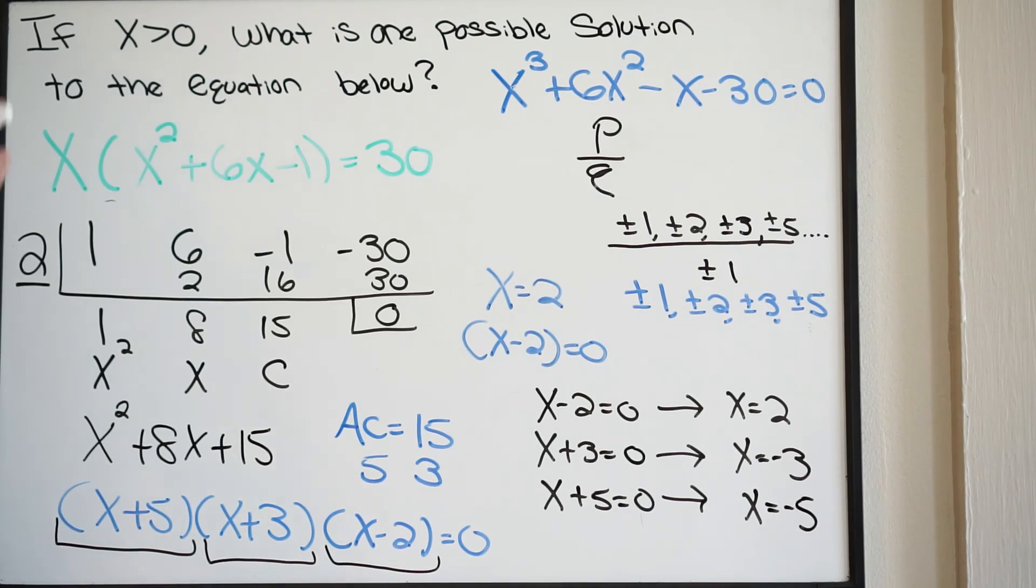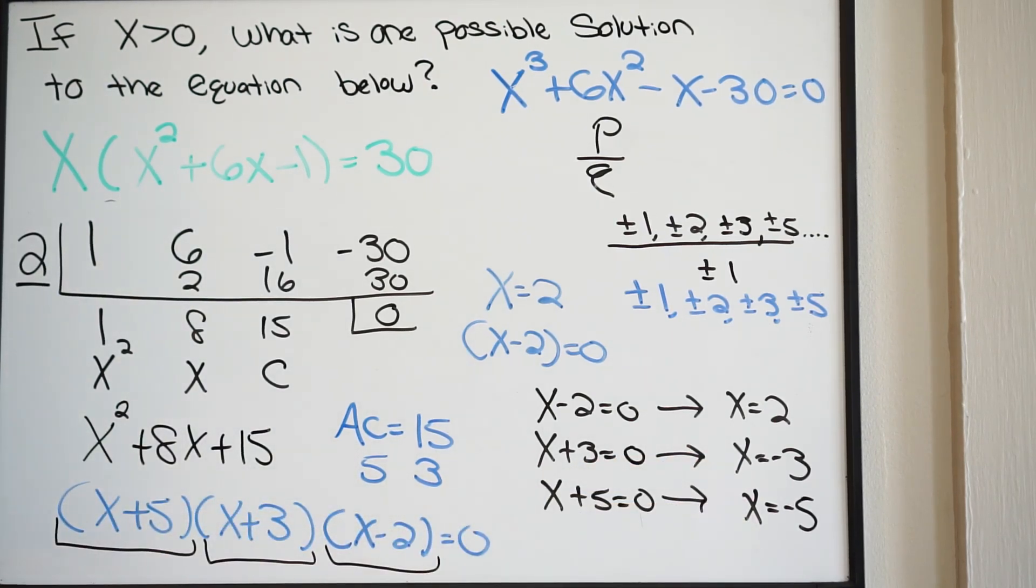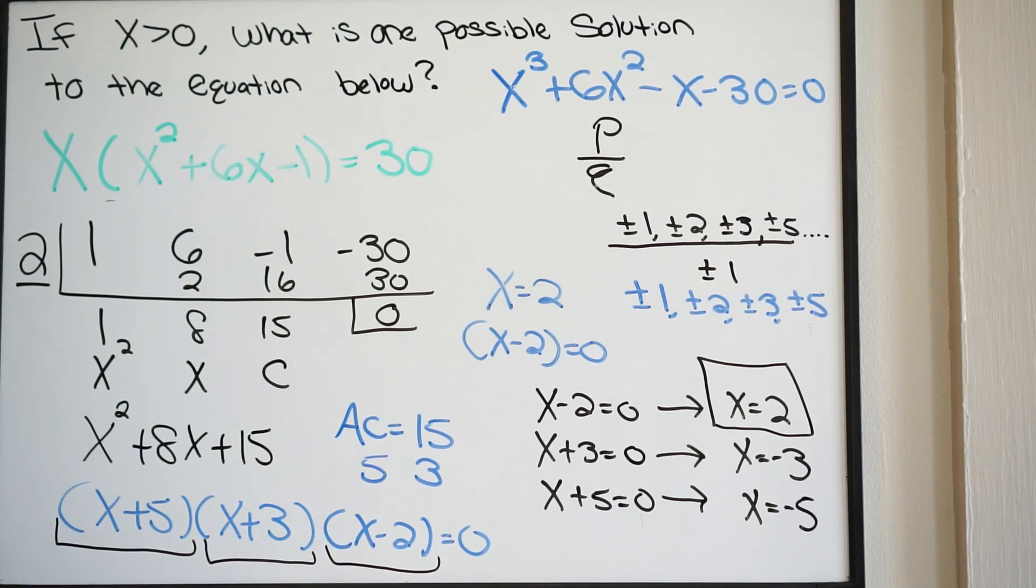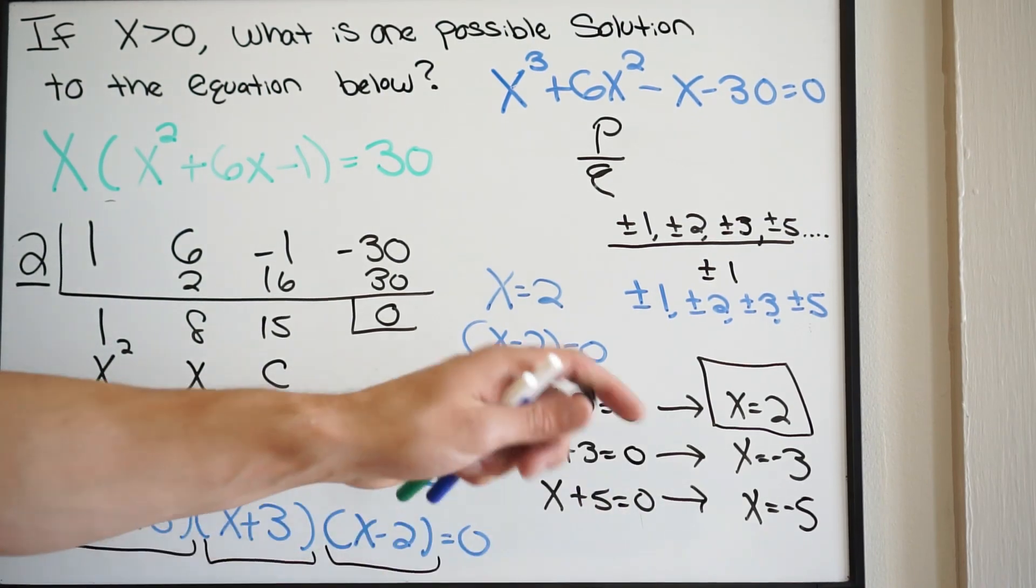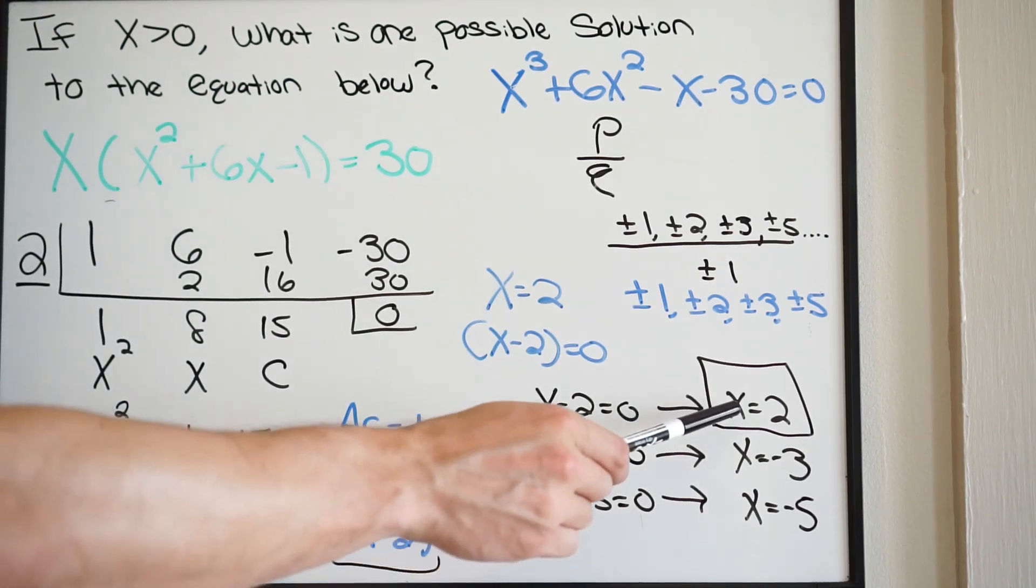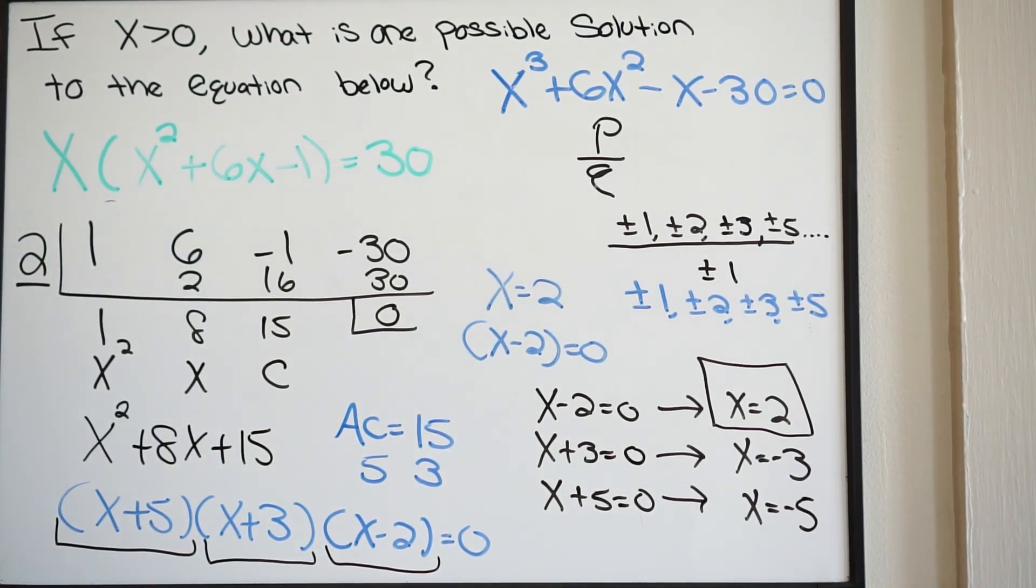If we look again at our question, it says if x is greater than 0, what is one possible solution? Well, you already know that these two possible solutions are already out. So your solution in this case is going to be x equals 2. What we just did, we went a step further so we could see the other possible solutions, which could be negative 3 and negative 5. But based on the problem, it has to be greater than 0. So 2 is going to be the only solution that satisfies our inequality here. And that is it.